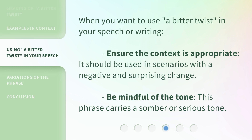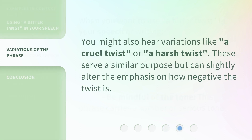When you want to use 'a bitter twist' in your speech or writing, ensure the context is appropriate — it should be used in scenarios with a negative and surprising change. Be mindful of the tone, as this phrase carries a somber or serious tone. You might also hear variations like 'a cruel twist' or 'a harsh twist,' which serve a similar purpose but can slightly alter the emphasis on how negative the twist is.